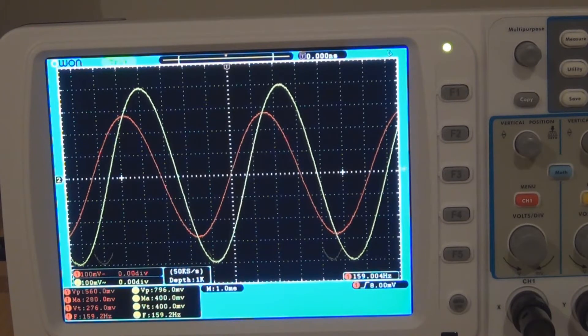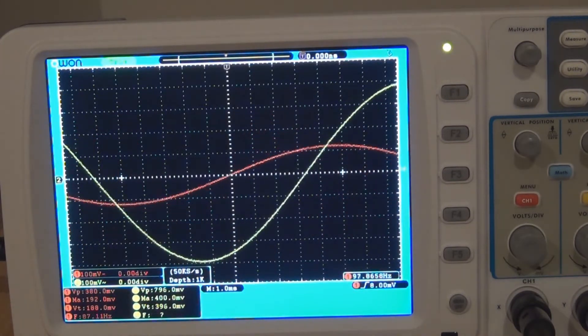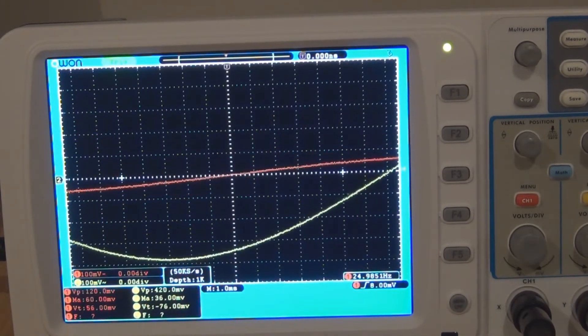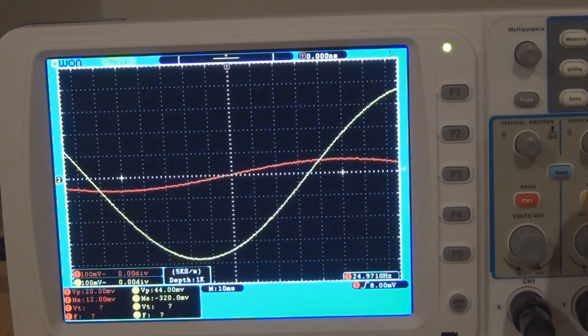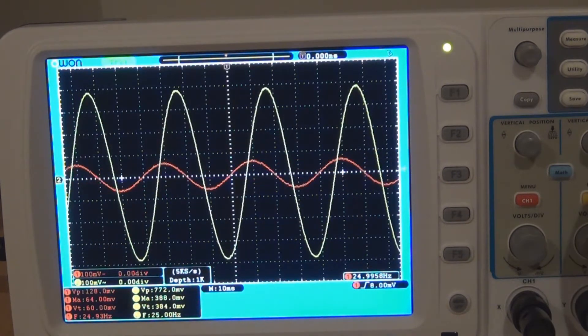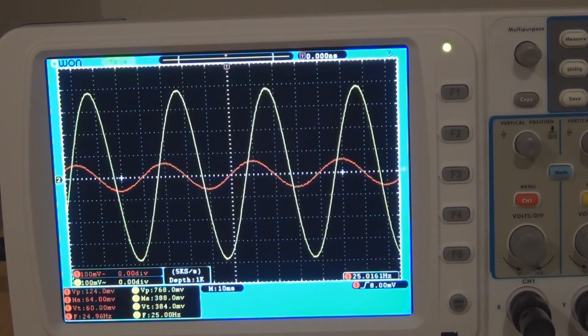So I'll just play with this slider here and we'll just lower it a bit. I have to change the time because it's getting off the screen. As you can see it gets smaller and smaller. Now it's down to 128 mV and the frequency is 25 Hz.